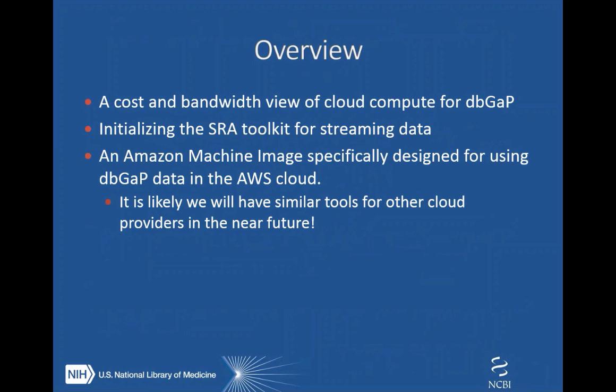This talk is broken into three parts. First, a cost and bandwidth view of cloud compute for dbGaP. Second, I'll talk about initializing the SRA toolkit for streaming data onto various compute clouds, using the Amazon cloud as a specific example. And then finally, I'll talk about an Amazon machine image specifically designed for using dbGaP data in the Amazon cloud.